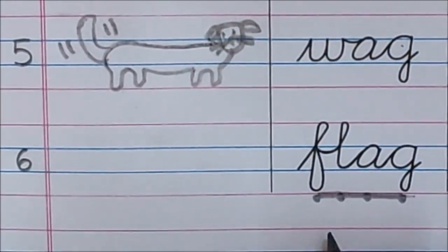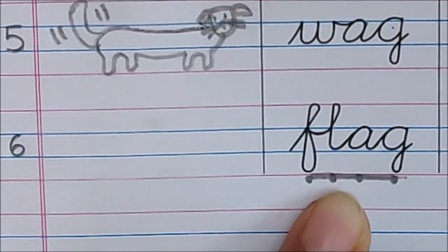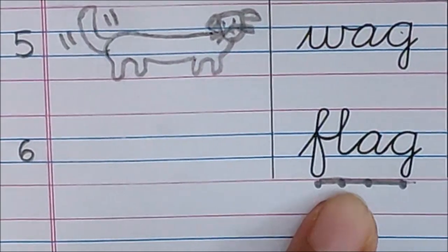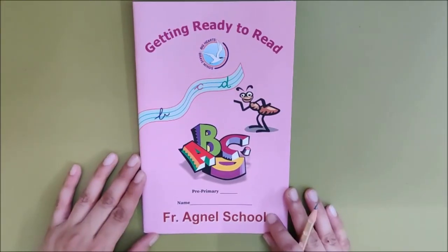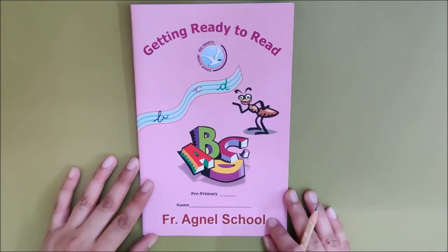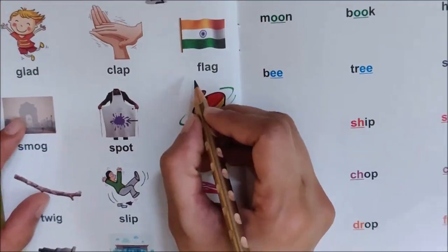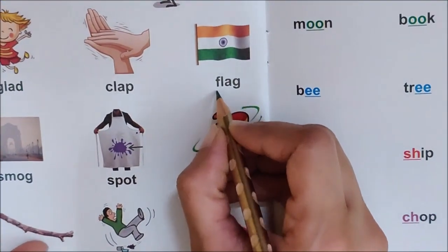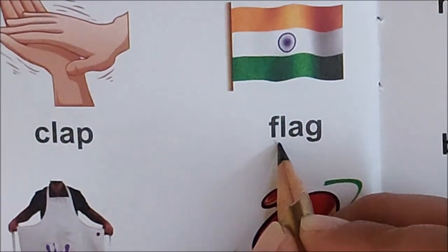So, children, as we have done reading of a new word, let us mark this word flag in our reader also. So, this is your reader. Open page number 14. One, ten and four extra is number 14. Look here, children. We have the word flag here. So, let us mark all the sounds here also.